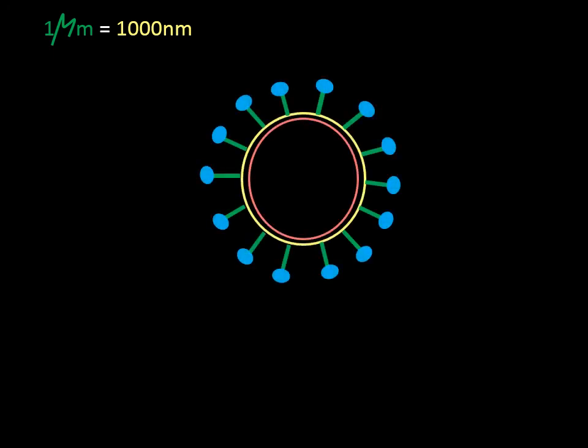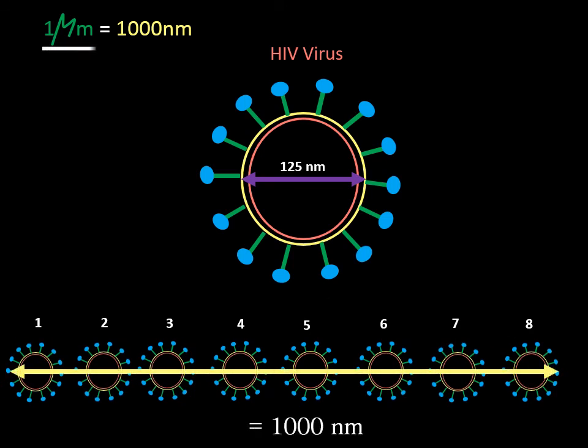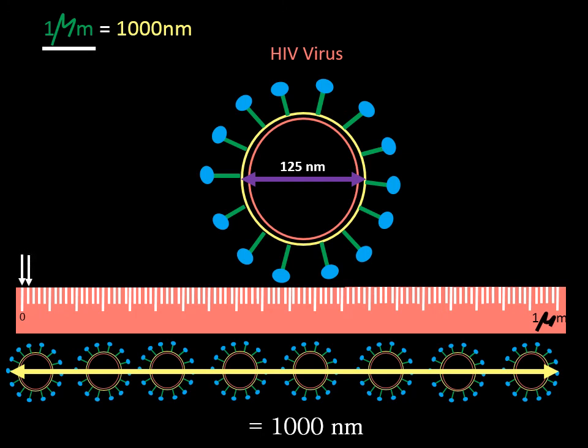Now let's understand how 1 micrometer is equal to 1000 nanometer. The best example of an organism that is as small to be measured in nanometer is a virus. HIV viruses are 125 nanometer wide. So 8 of these HIV viruses make up to 1000 nanometer. This means that between the 0 and 1 micrometer, you could fit in 8 viruses.